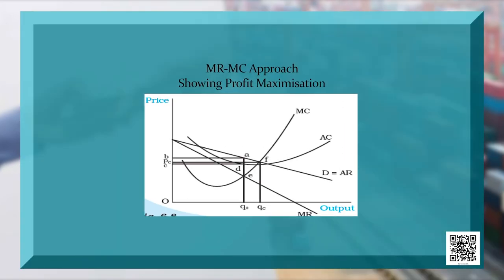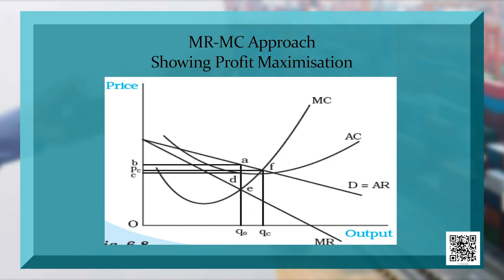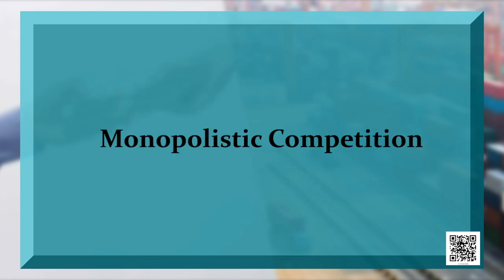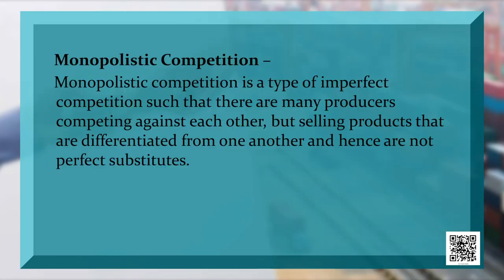The next approach is the MR-MC approach of profit maximization. MR stands for Marginal Revenue and MC stands for Marginal Cost. I will explain about profit with the help of the MR-MC curve. We can see that both AR and MR are downward sloping. The point where MR intersects MC, and after that MC is rising, profit becomes maximum.